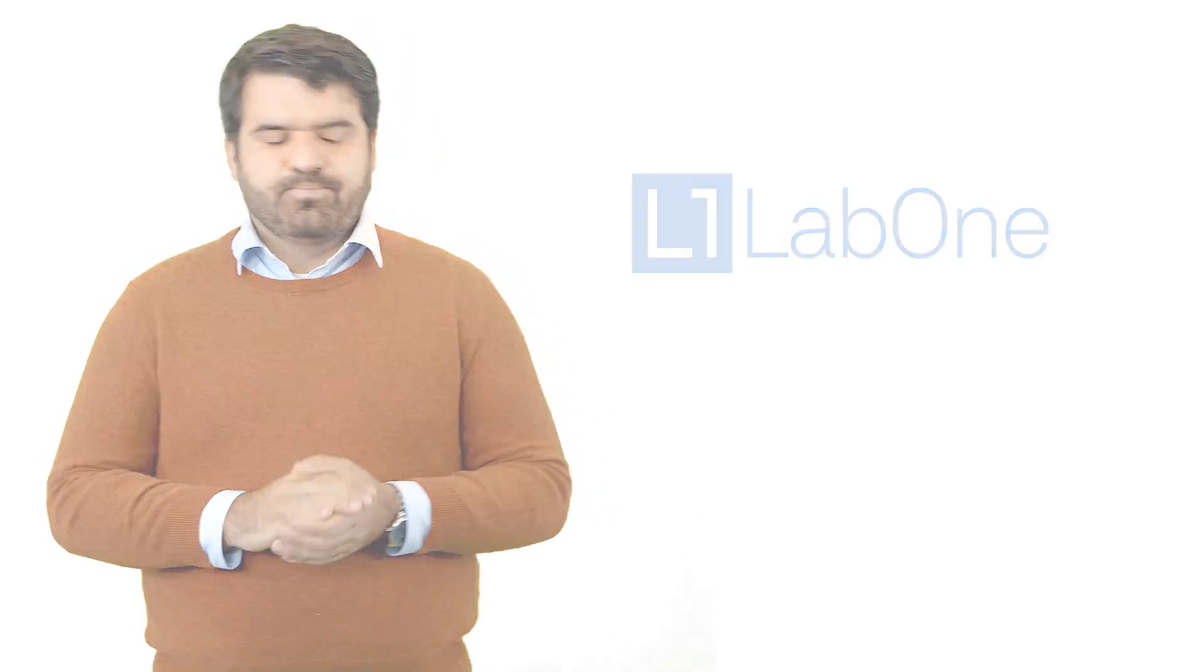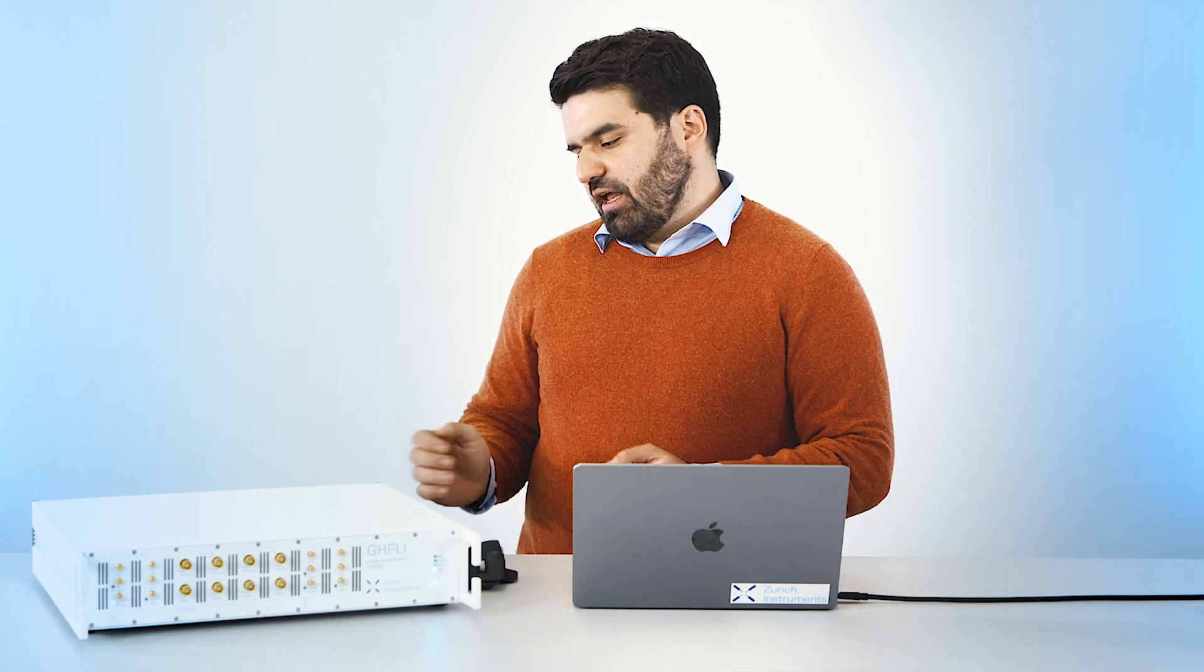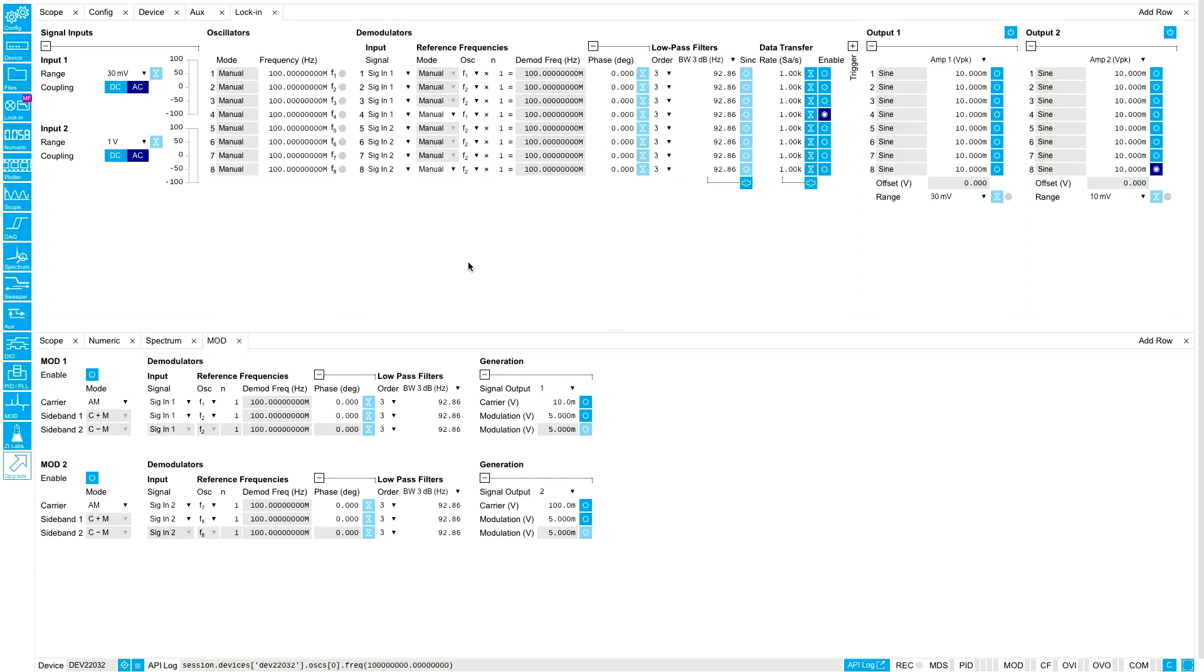Here I have one of our UHFLI lock-in amplifiers. Let's simulate a generic modulated carrier. I set the carrier frequency to 1.3 gigahertz.